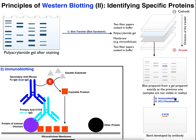The next step is immunoblotting. First we perform a blocking step: we block all the open spots on the nitrocellulose membrane with a protein such as casein from milk, so that antibodies don't adhere non-specifically to the membrane. We want to block every possible open spot, and this is called the blocking step, typically done with some kind of milk.